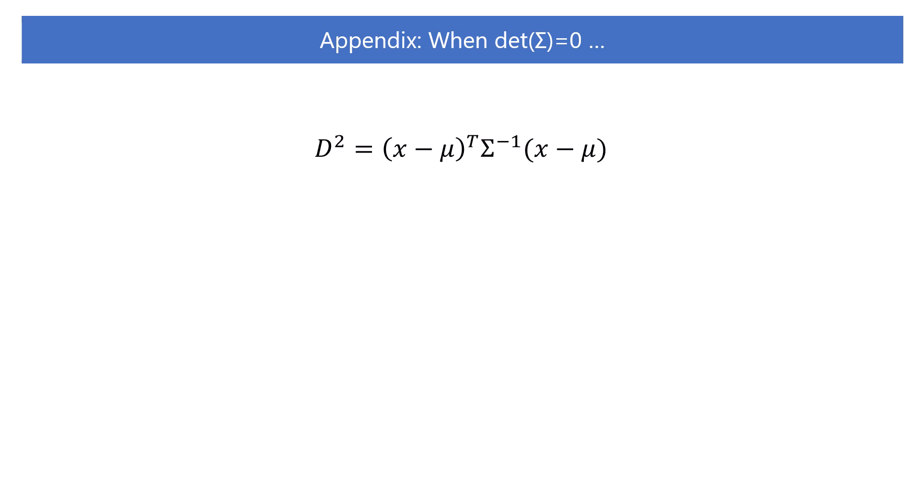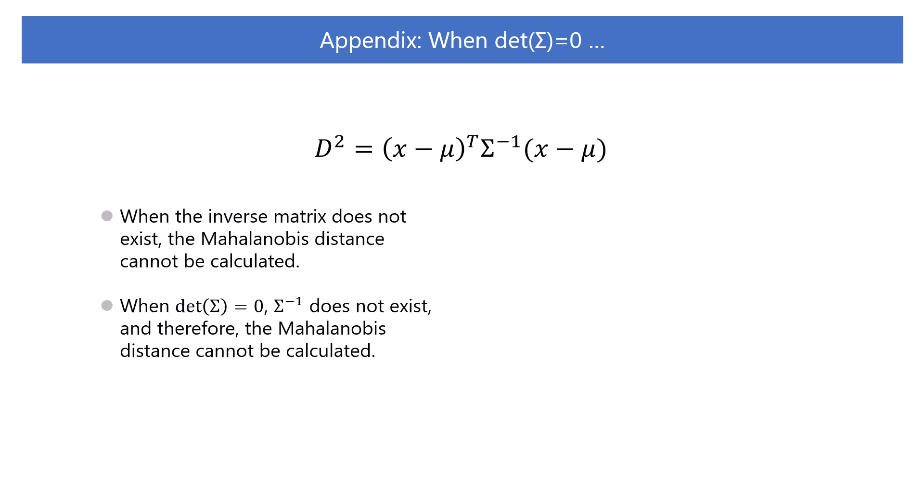Let's go back to the formula for the Mahalanobis distance. This formula uses the inverse of the covariance matrix. But what happens when the inverse matrix does not exist? When the inverse matrix does not exist, the Mahalanobis distance cannot be calculated. When the determinant is zero, the inverse matrix does not exist. Therefore, when the determinant is zero, the Mahalanobis distance cannot be calculated.